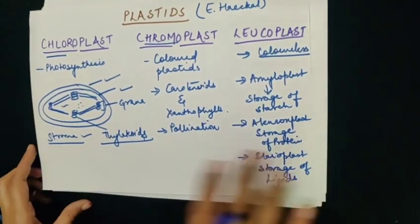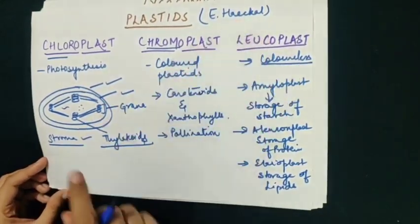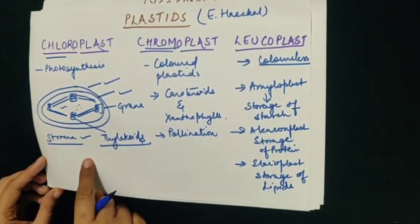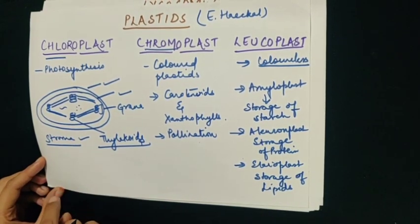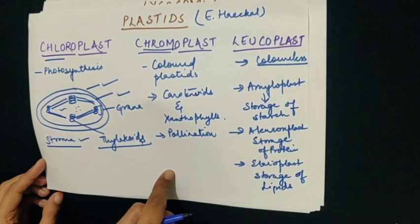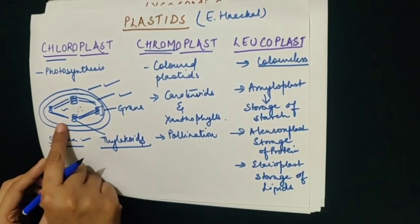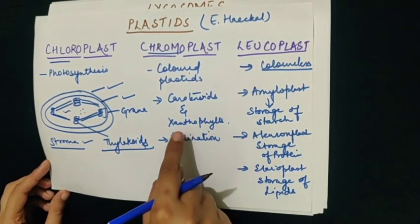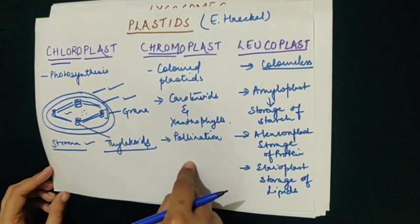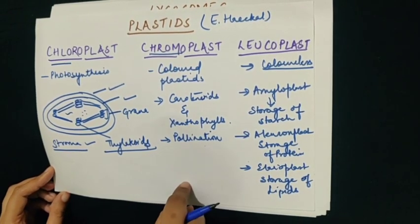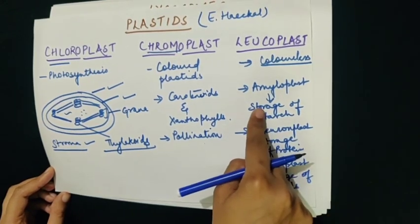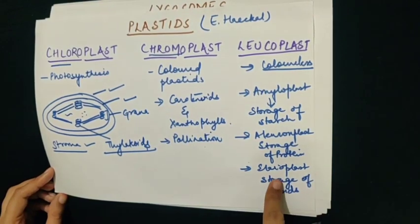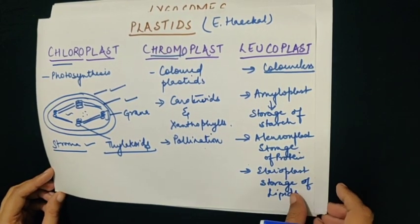So to summarize what we have studied about plastids: they were discovered by E. Haeckel. There are three kinds — chloroplast, chromoplast and leucoplast. Chloroplasts are green colored plastids that help in photosynthesis and are semi-autonomous because they have their own DNA and proteins. Chromoplasts are colored plastids with pigments like carotenoids and xanthophylls, helping in pollination and seed dispersal. Leucoplasts are colorless plastids with three types — amyloplast, aleuronplast and elaioplast — depending on the substance they store.